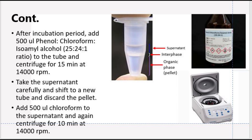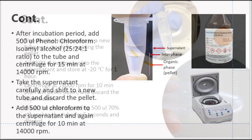Then add 500 microliter chloroform to the eppendorf tube and centrifuge it for 10 minutes at 14,000 rpm. Now we will have two phases: the upper phase that is supernatant that contains DNA, and below is the organic phase.